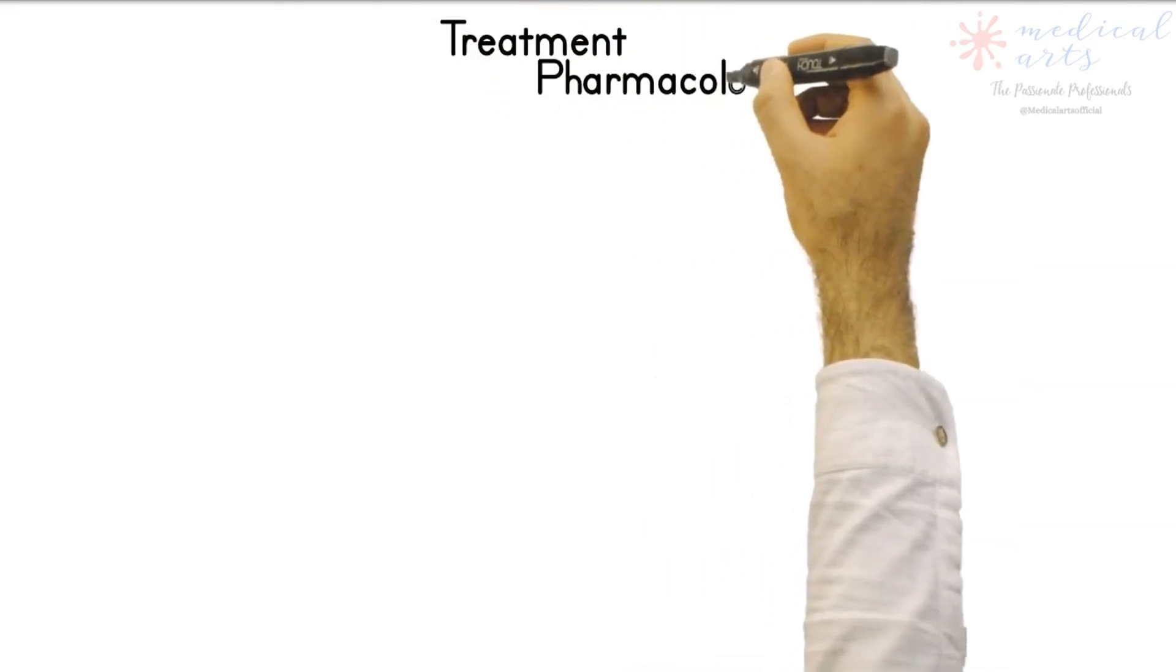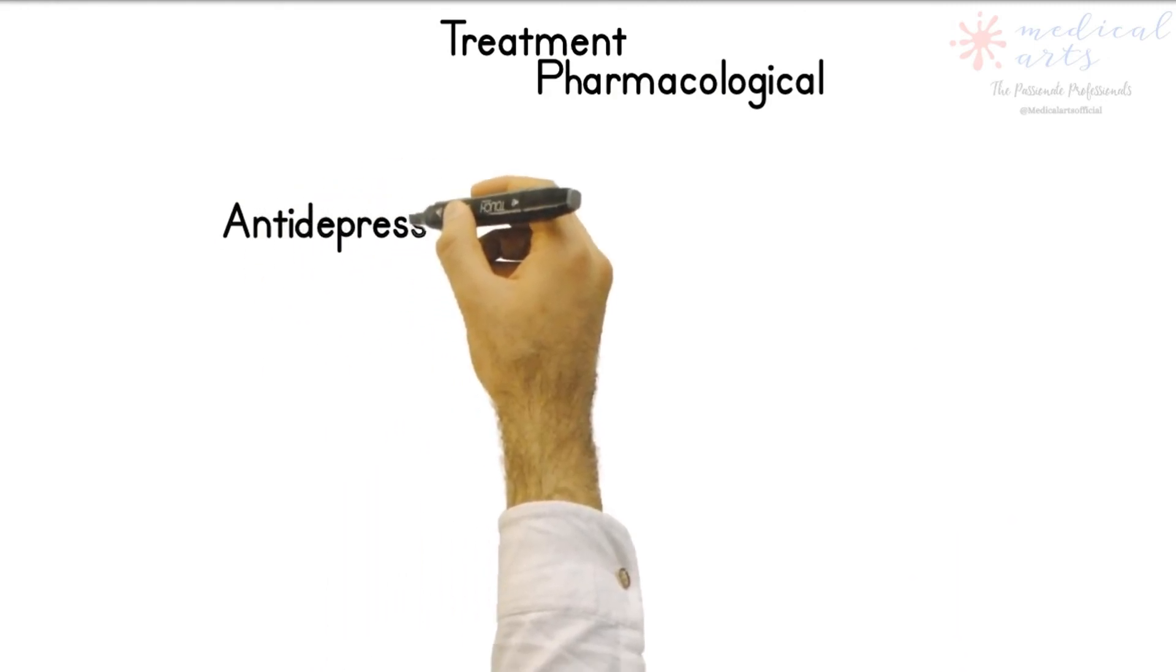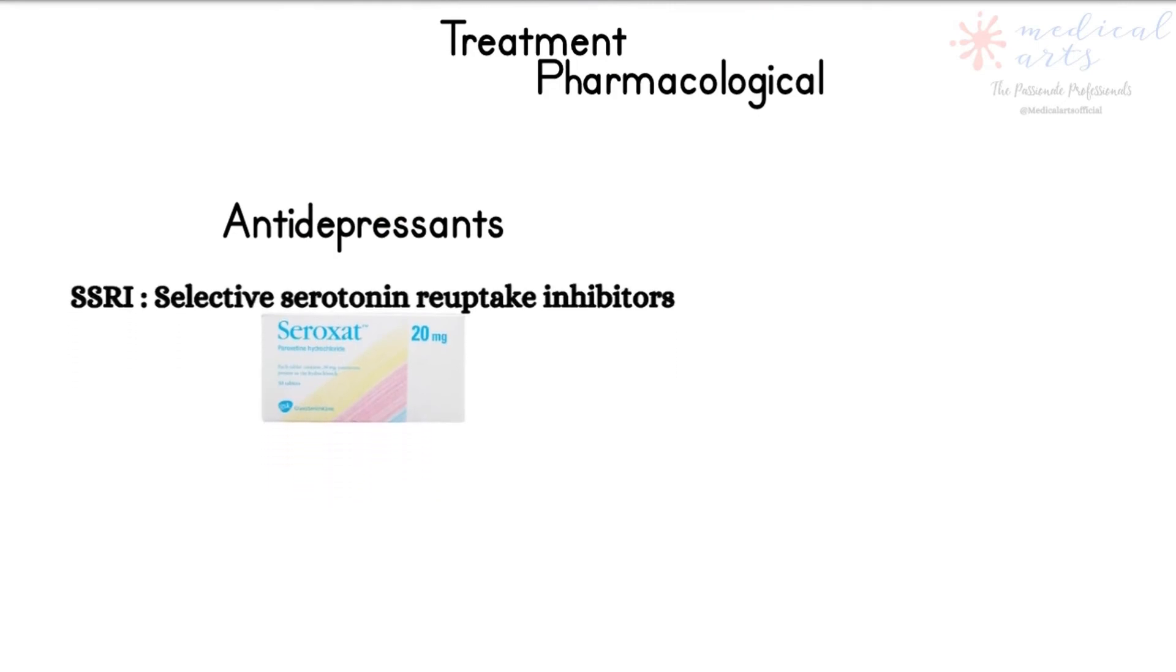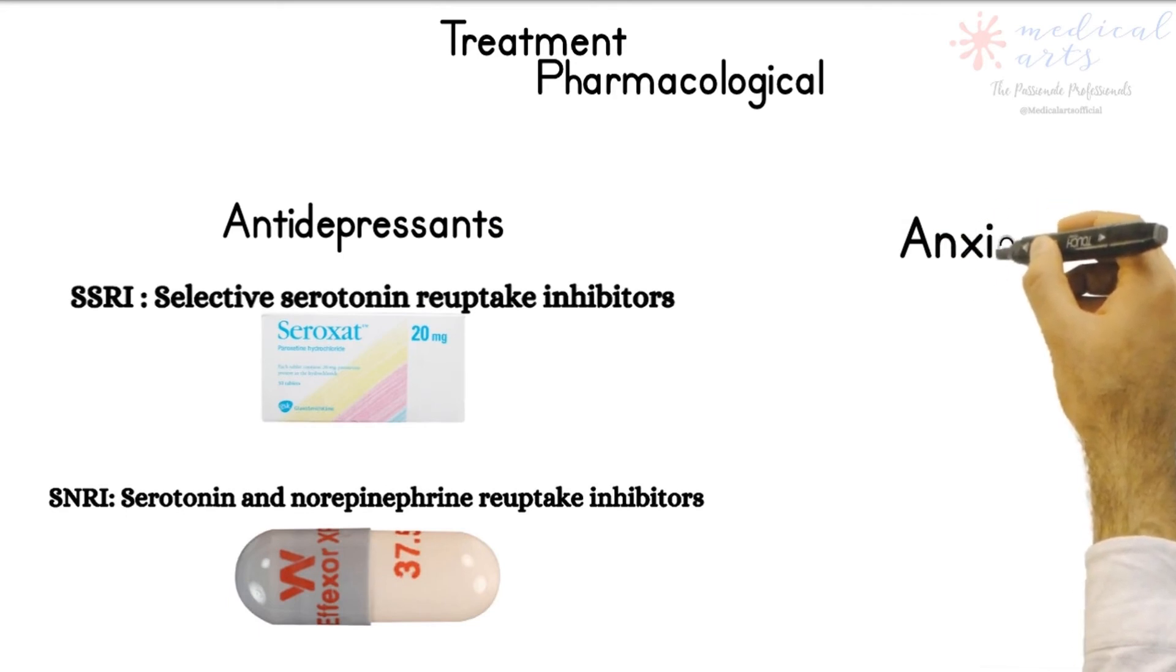Antidepressants are used to manage panic disorder. SSRIs are a group of medications that regulate the level of serotonin in the brain. SNRIs are a group of medications that regulate levels of serotonin and norepinephrine in the brain.